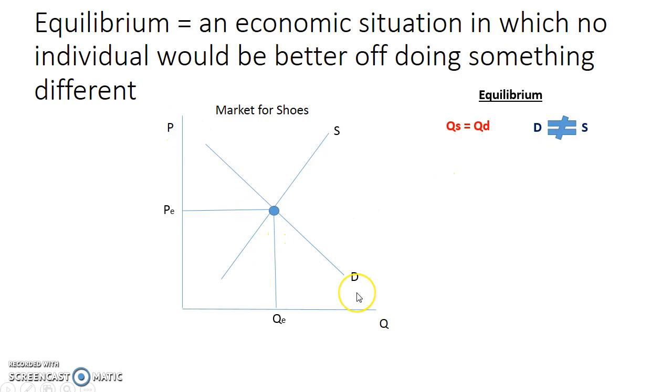The demand curve is downward sloping because of the law of demand, and the supply curve is upward sloping because of the law of supply. Therefore, the formula for equilibrium is not demand equals supply.